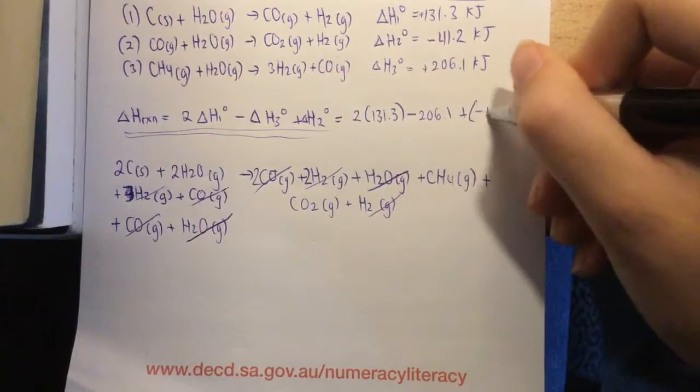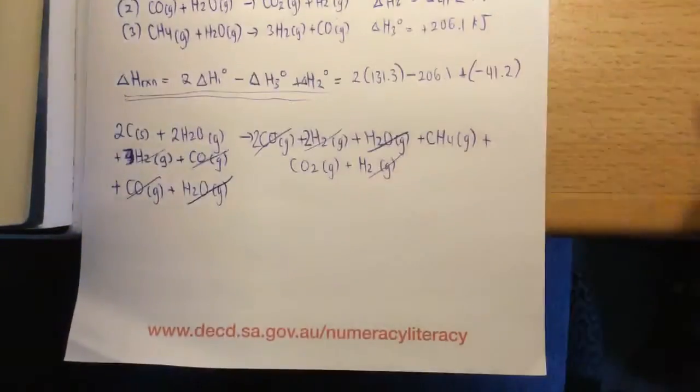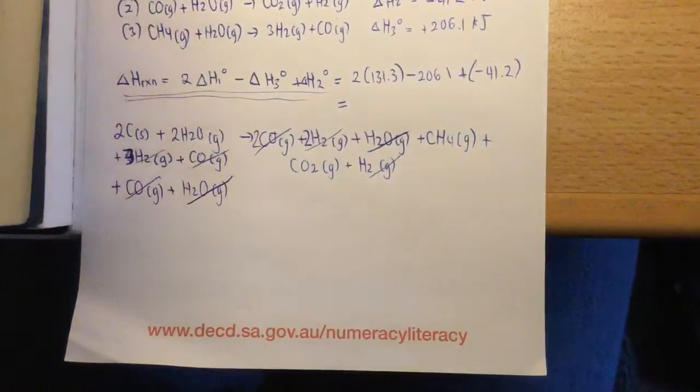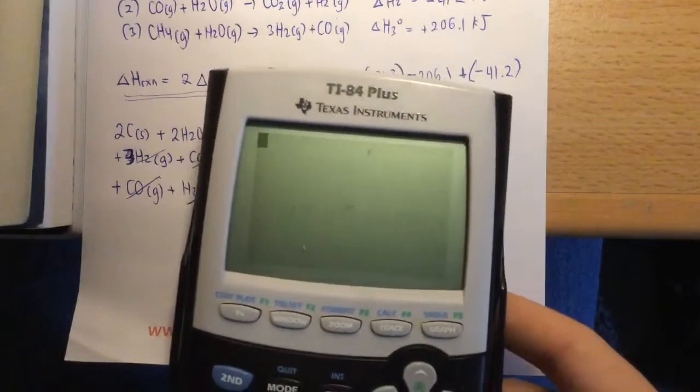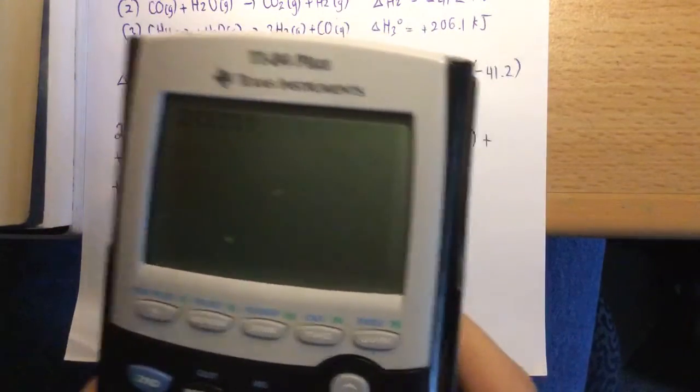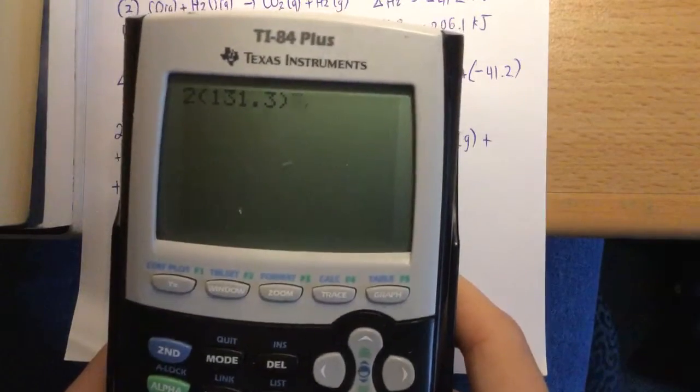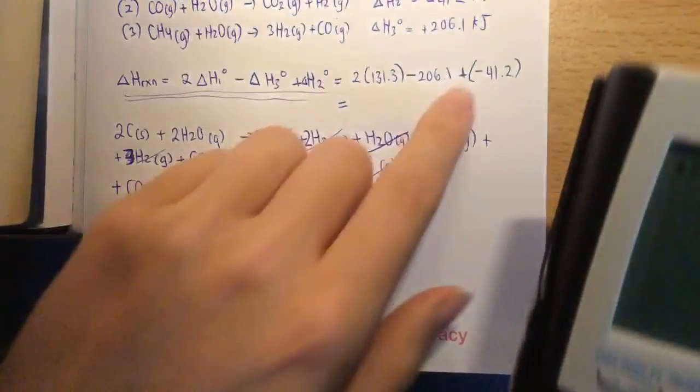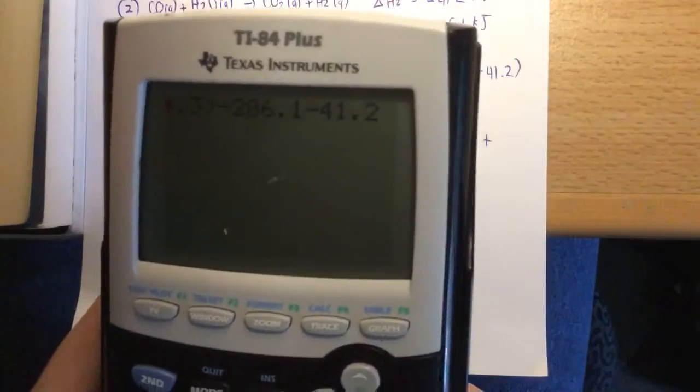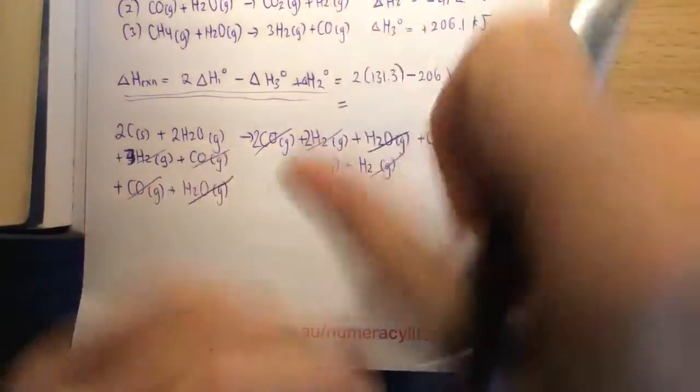And lastly, we add on delta H2. So we add on, and this is where it gets a little bit interesting, but we add on a negative number. So obviously positive and a negative make a negative. So be careful when you put that in your calculator. So now we can calculate the delta H of reaction. So essentially, we get two lots of 131.3. Just all positive there. Then we take 206.1. And then we take, because remember, plus and minus just make minus, take a 41.2.